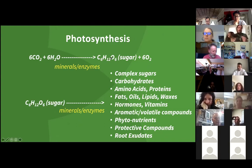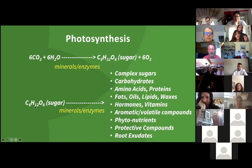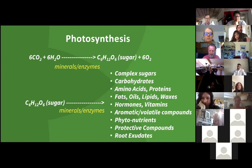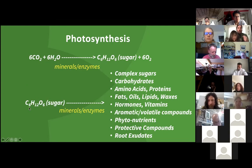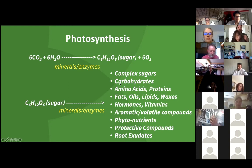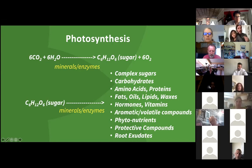After that, the plant takes that sugar, which is really a building block — like a brick. The plant stitches that building block together to build all sorts of different structures and plant compounds through other metabolic pathways. Using sugar as a building block, as the plant stitches lots of them together, it will build more complex sugars and carbohydrates. It will link in nitrogen or sulfur, building amino acids, then stitch those together to build proteins.